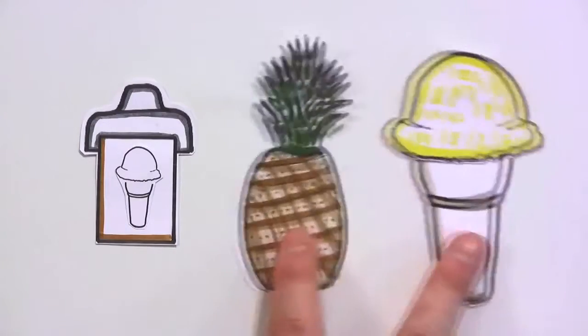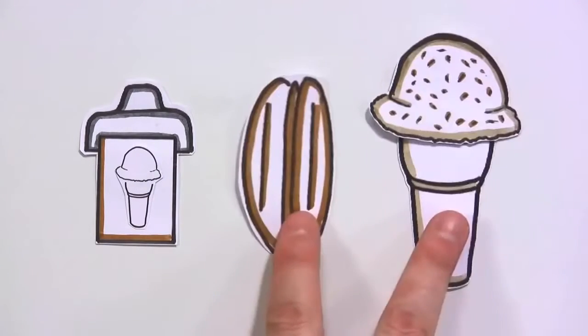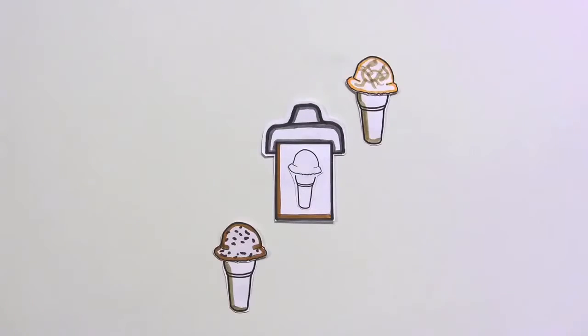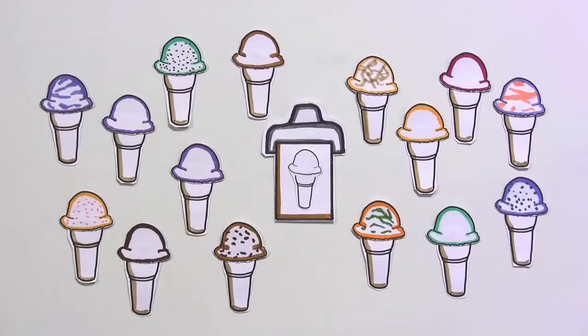The Smiths decided to make pineapple ice cream. The Joneses made ice cream with pecans. Soon, every kind of ice cream imaginable was being made by Scoopville's residents at very little cost.